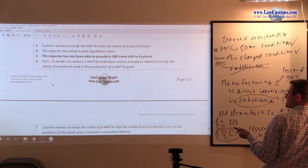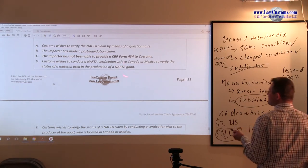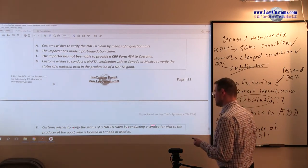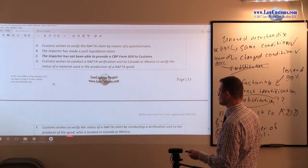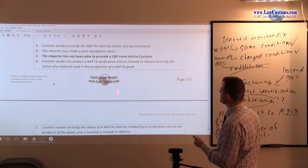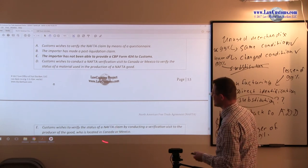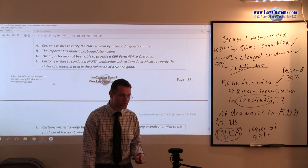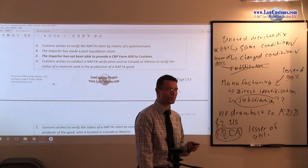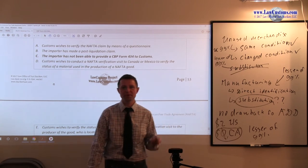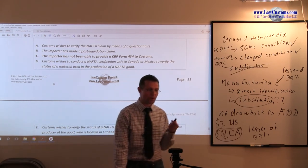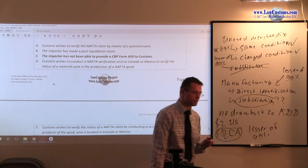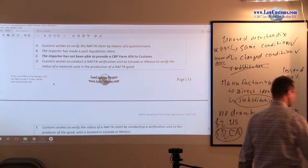Customs wishes to conduct master verification by physical visit, that's fine. Customs wishes to verify status of claim by conducting the visit to the producer of goods. Notice, Canada or Mexico, not the United States because why? Because the Certificate must be signed by whom? By the exporter. It is one of the few, if not the only, free trade agreement which requires exporter, which mandates that exporter signs the Certificate of Origin.